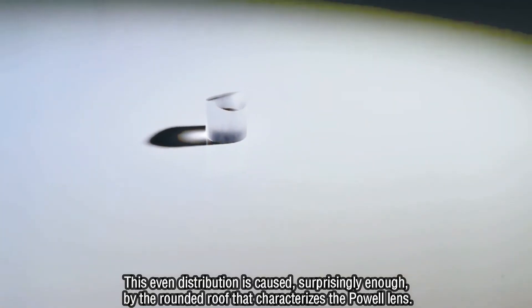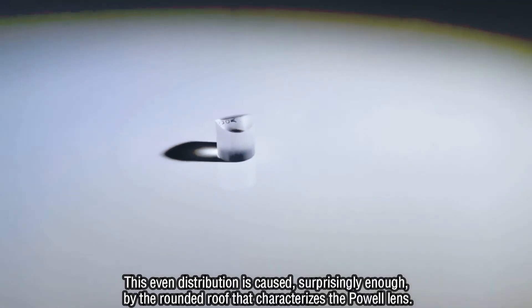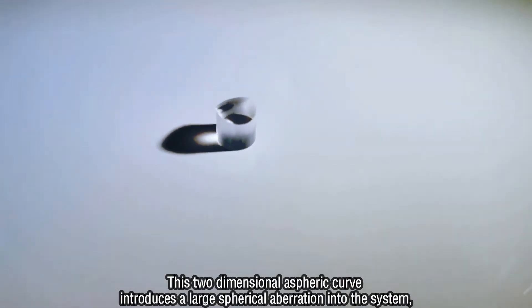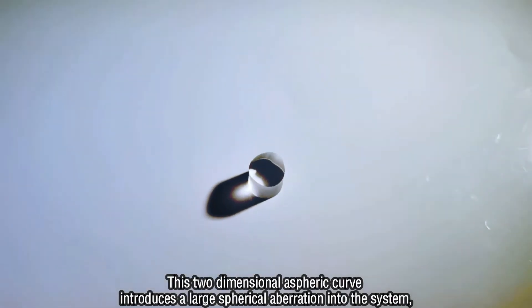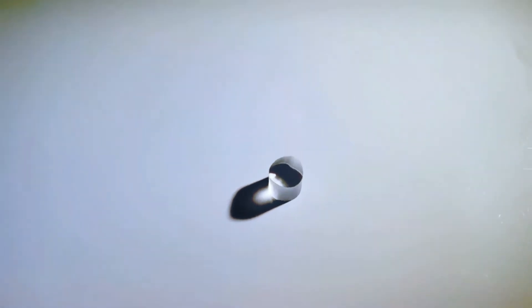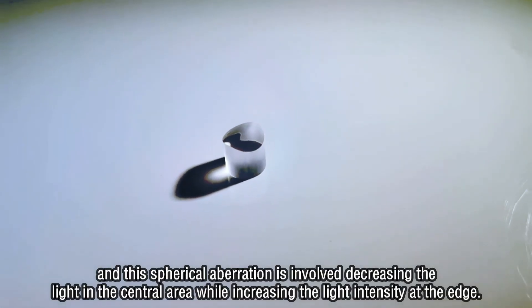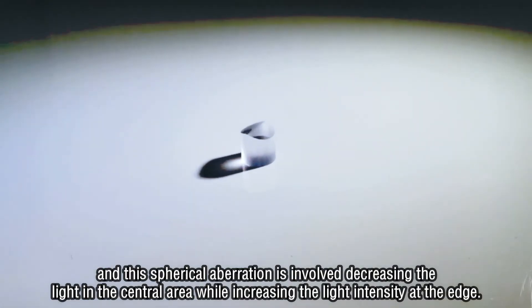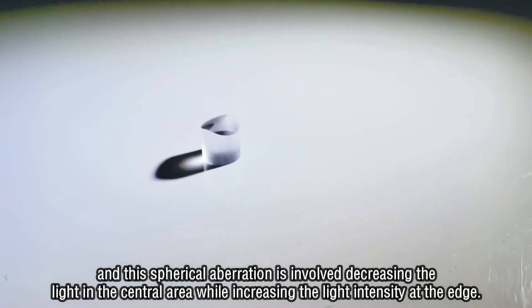This even distribution is caused, surprisingly enough, by the rounded roof that characterizes the Powell lens. This two-dimensional aspheric curve introduces a large spherical aberration into the system, and this spherical aberration decreases the light in the central area while increasing the light intensity at the edge.